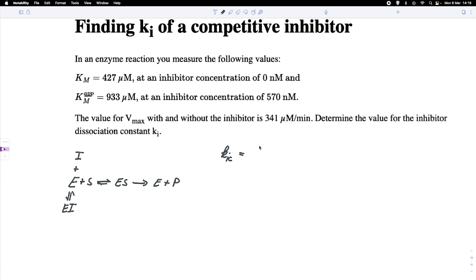It equals the concentration of the enzyme times the concentration of the inhibitor, divided by the concentration of the enzyme-inhibitor complex.